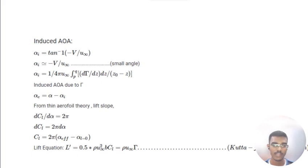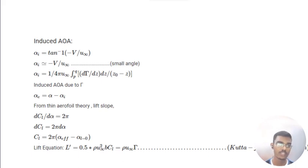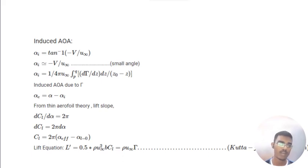The induced angle of attack is equal to tan-inverse of minus v divided by the free stream velocity. For a small angle of attack, the induced angle of attack equals minus v divided by U-infinity. Therefore the induced angle of attack becomes 1 over (4 pi U-infinity), integrated from p to q, of (d-gamma/dz) dz divided by (z-naught minus z). The induced angle of attack due to gamma equals alpha-effective minus alpha-i.